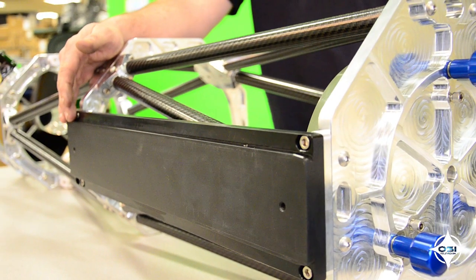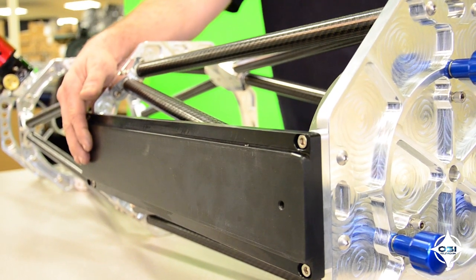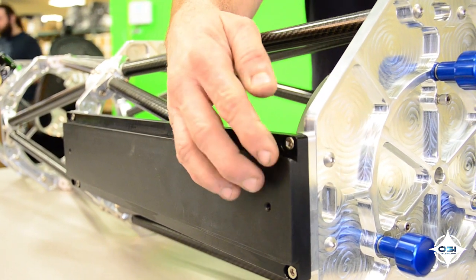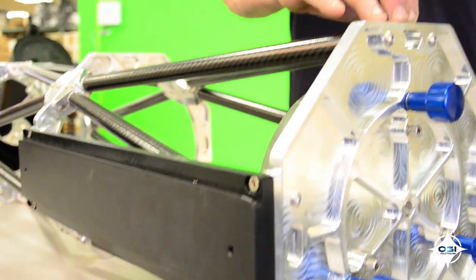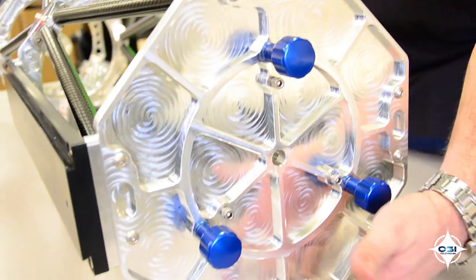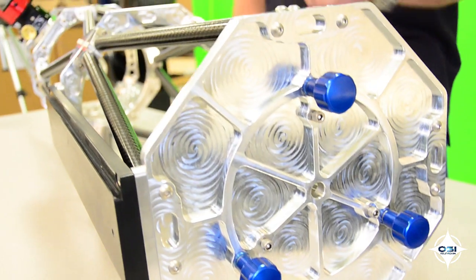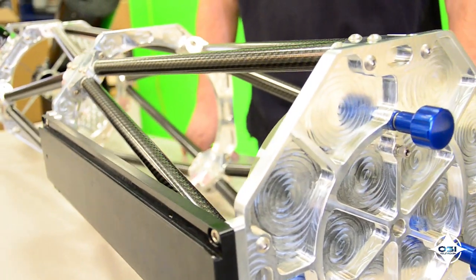It mounts via a standard D-sized dovetail bar and we put four mounting positions all around the telescope. So you can either put additional bars on to carry accessories or move the bar for different mounting orientations.